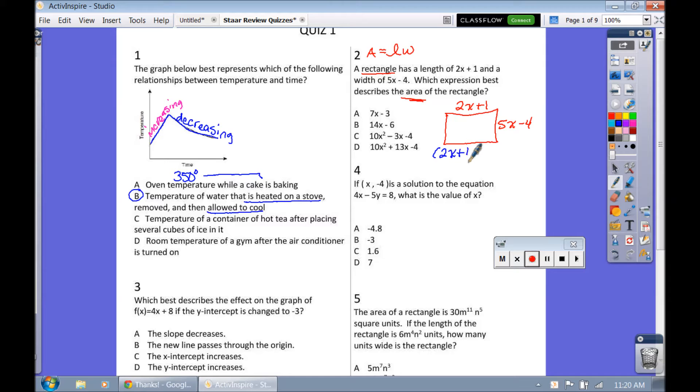So we're going to multiply the length and the width of these two guys together. And if you remember, this is going to be a multi-distribution problem. So we'll write it out, length times width. Start with the 2x. So we're going to do 2x times 5x first. 2x times 5x, 10x squared. 2x times negative 4 is negative 8x.